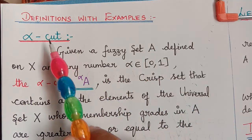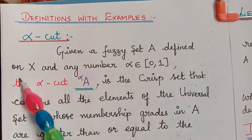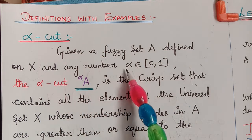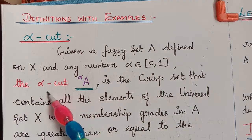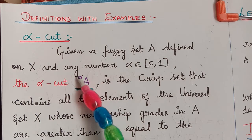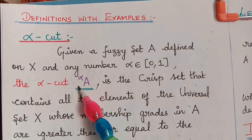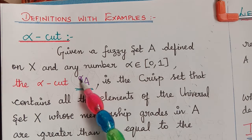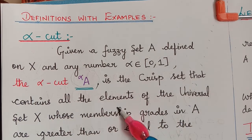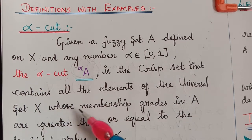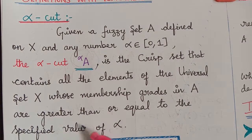To begin with, we shall first learn the definition of alpha cut. Given a fuzzy set A defined on the universal set X, and any number alpha belonging to the interval [0,1], the alpha cut is represented as A_alpha.